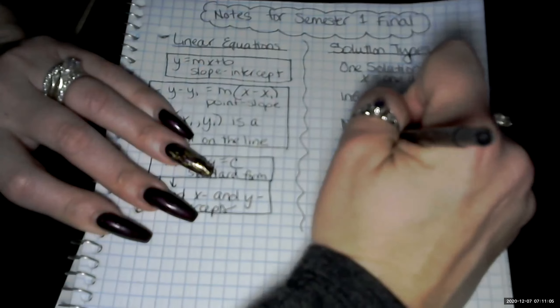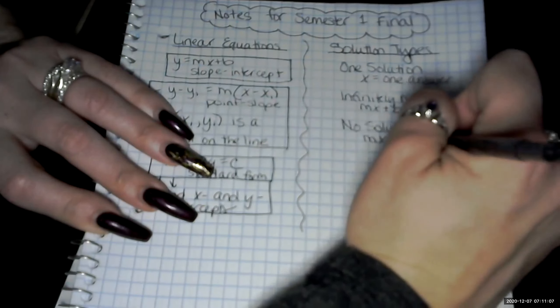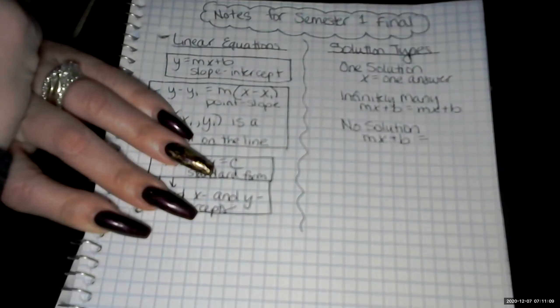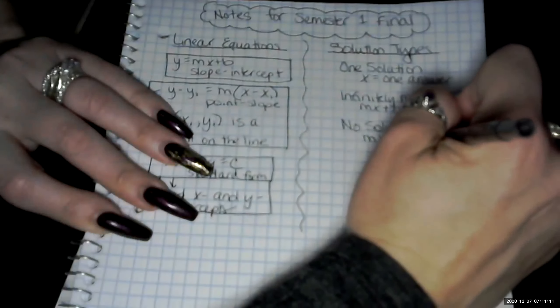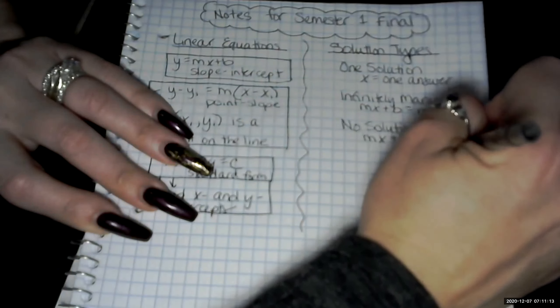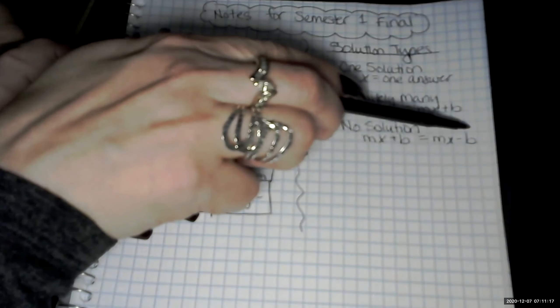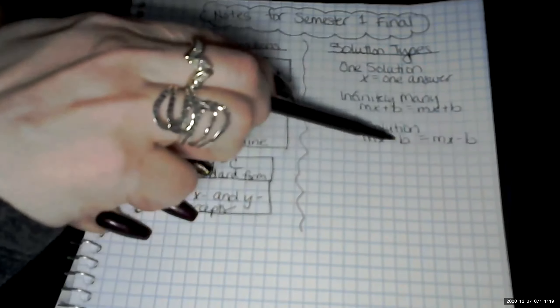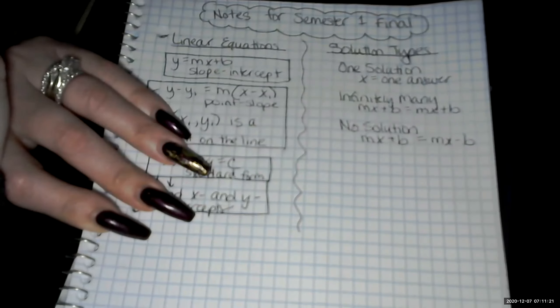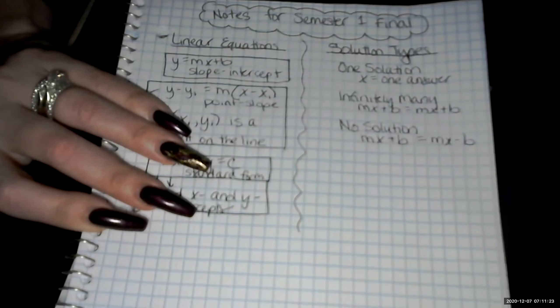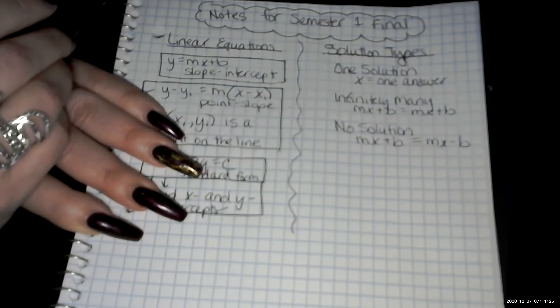So we'll do mx plus b equals, maybe we say that it's mx minus b, just to kind of give an example. They could be the same distance from zero, the same value here, but one's positive, one's negative.